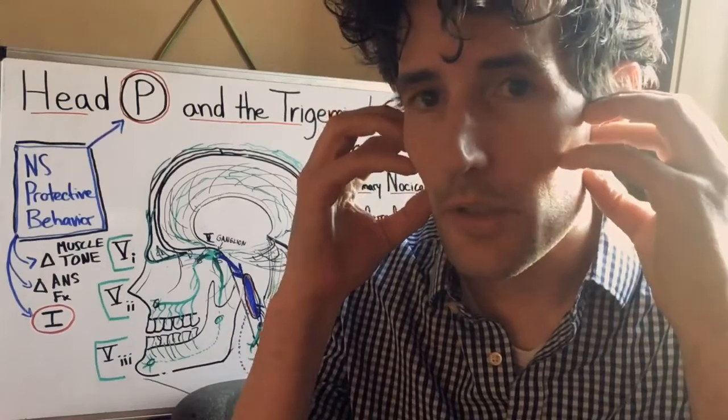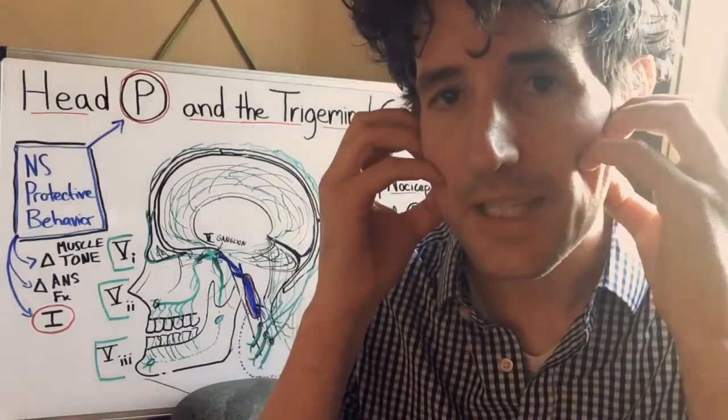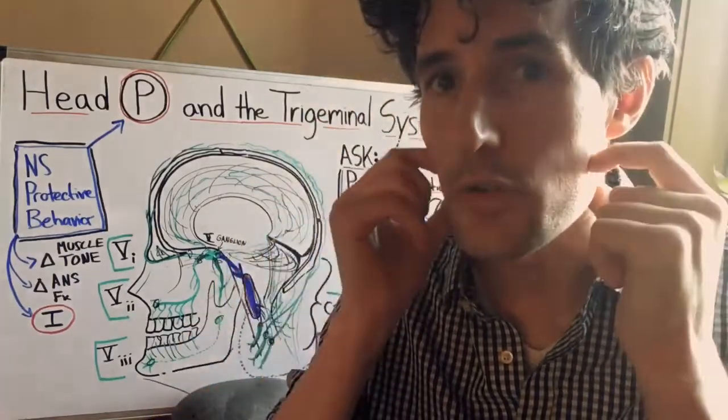Right here it also innervates the TMJ capsule and the muscles of mastication and then it perforates into the jaw.